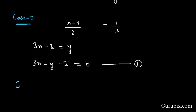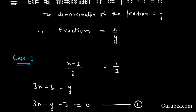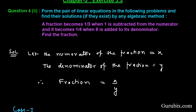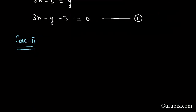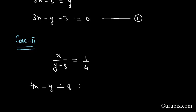Now we move to case two. The fraction becomes 1/4 when 8 is added to its denominator. The numerator remains the same and 8 is added to the denominator, so we get x/(y + 8) = 1/4. Cross multiplying, it becomes 4x − y − 8 = 0. This is equation number 2.